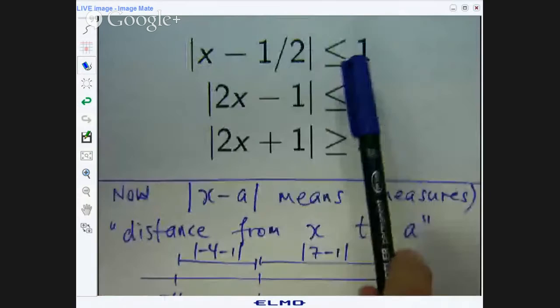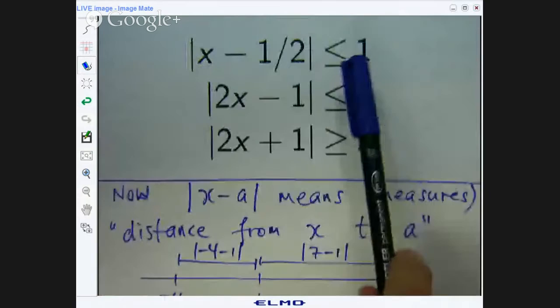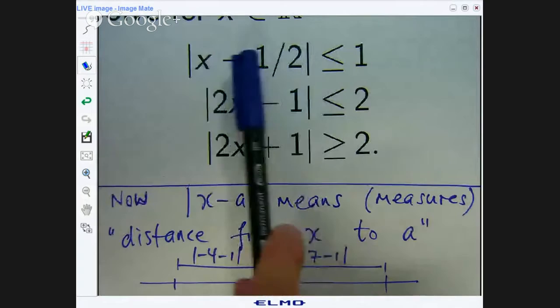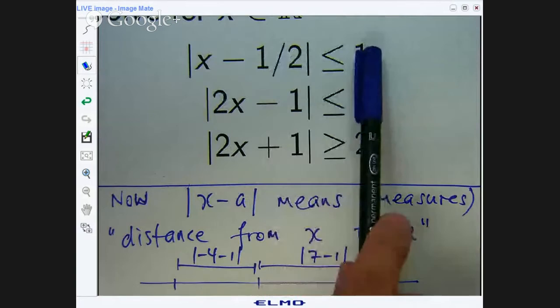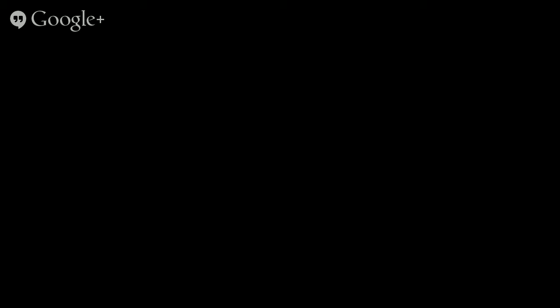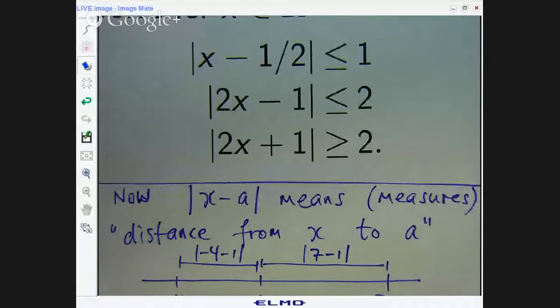Now when we solve an inequality like this, we are trying to find all the x points whose distance to the point one half in this case is no greater than one. The distance is less than or equal to one. Now, if you can remember that, then these problems are really easy. You don't have to do any calculations. So the distance between x and the point one half is less than or equal to one. So let's actually do a problem and we can see how it works.